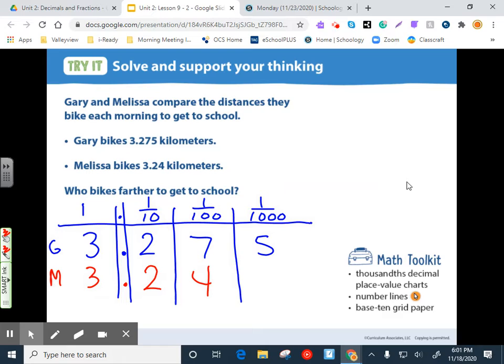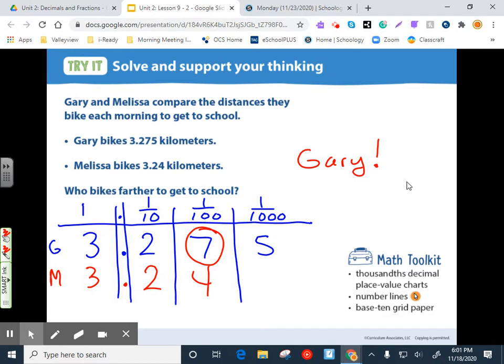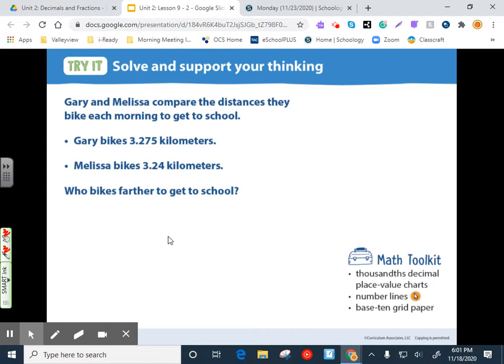So let's compare these two. The ones column, the threes match up. So we look over at the tenths column. The twos are the same. So Gary, looking at the hundredths column, Gary wins out because he's biking seven hundredths and is comparing the four hundredths. So Gary is our big winner because he knows decimal place value.